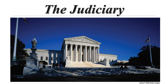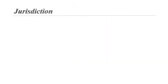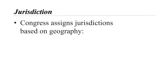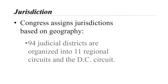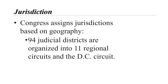Welcome to lecture two on the federal judiciary. We left off talking about jurisdiction. If a case belongs in federal court, the next question is which federal court has jurisdiction? Congress assigns jurisdictions based on geography. The nation is currently divided into 94 judicial districts, which are then organized into 11 regional circuits and the DC circuit. Each circuit court exercises appellate jurisdiction over district courts within its region.